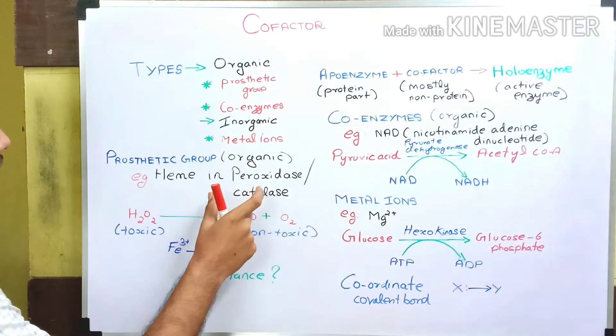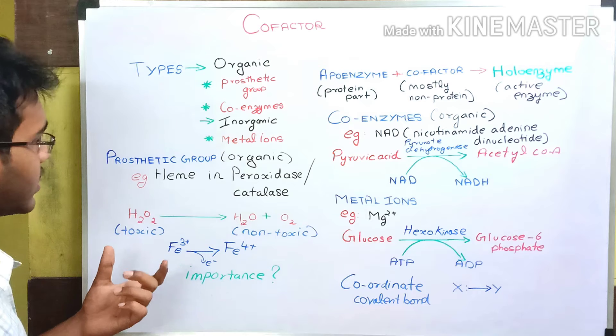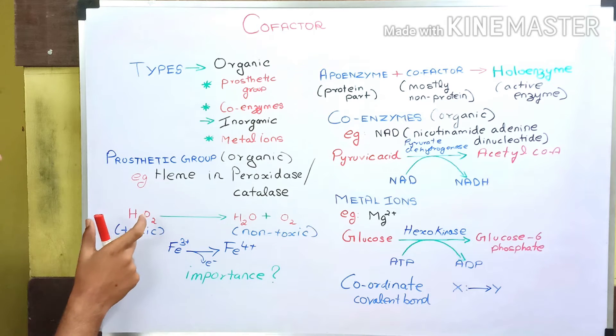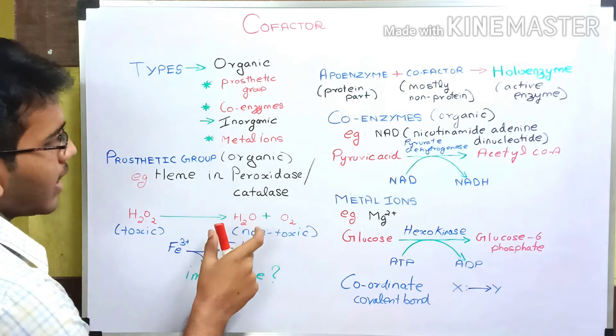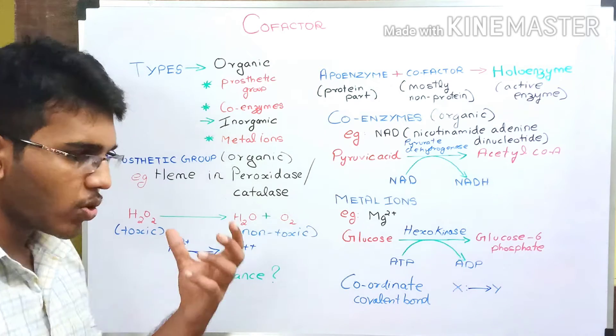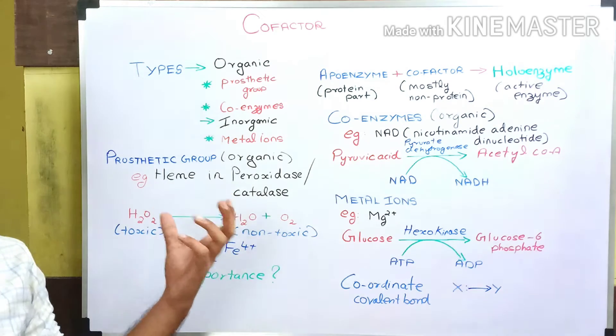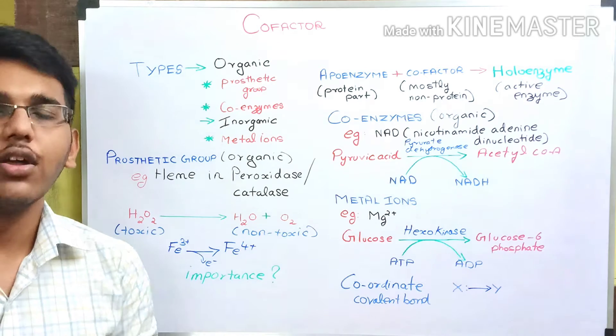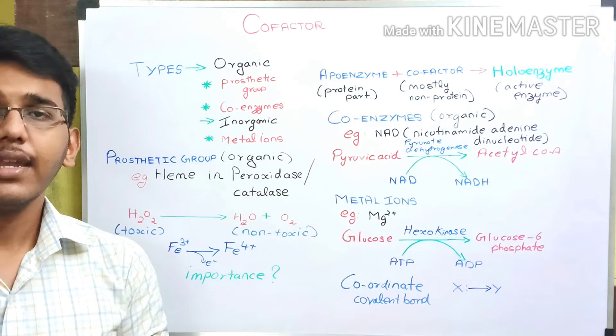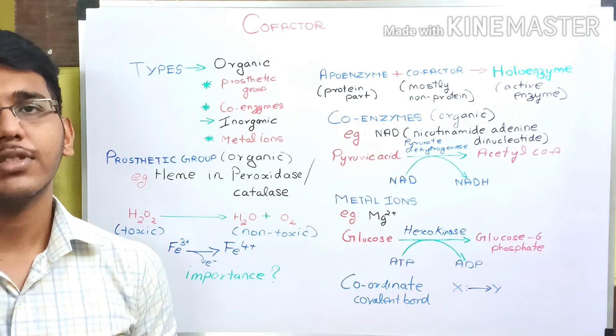This peroxidase or catalase enzyme helps in the conversion of hydrogen peroxide produced in our body to water and oxygen. So why does this reaction need to occur? What is the need of this reaction? Because in nature, nothing happens without a reason.